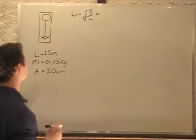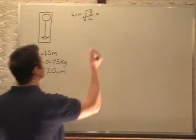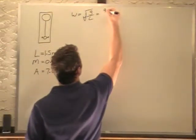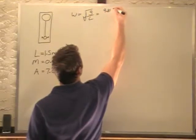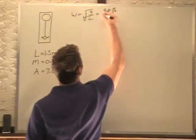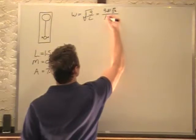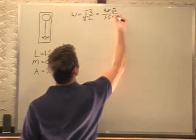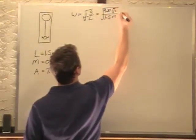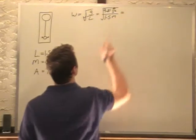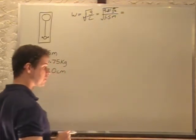So if we plug in our g and our L to this, 9.81 meters per second squared, divided by our length of 1.5 meters, square root. So we get an omega of 6.54 hertz.